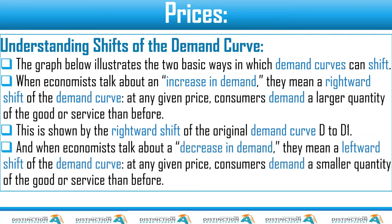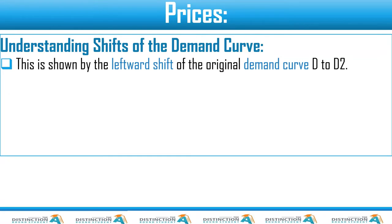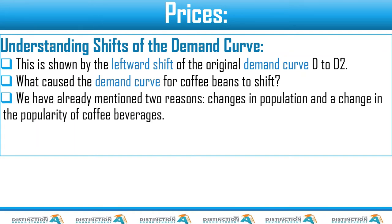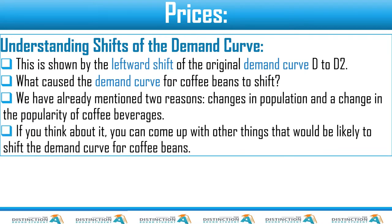When economists talk about a decrease in demand, they mean a leftward shift of the demand curve. Again, this has nothing to do with price. At any given price, consumers demand a smaller quantity of the good or service than before. This is shown by a leftward shift of the demand curve. What causes the demand curve for coffee beans to shift? We have already mentioned two reasons: the change in population and the change in the popularity of coffee beverages.